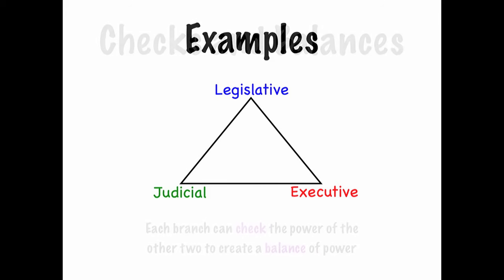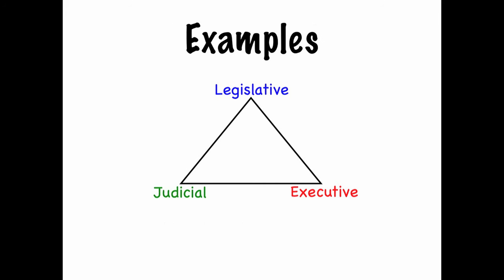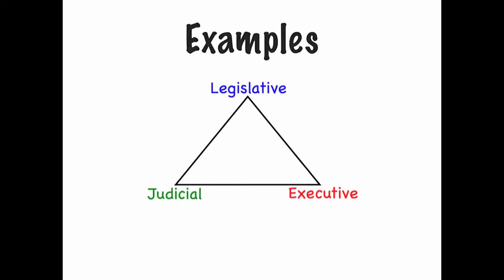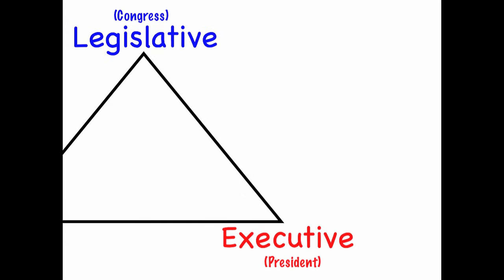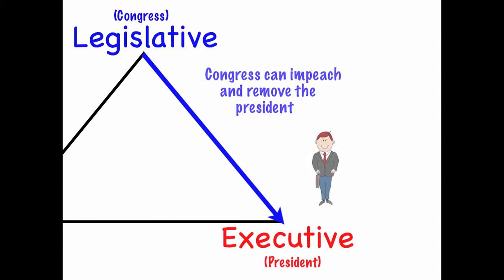Let's look at a few examples of how this works. Congress has power over the President because Congress can impeach and remove the President. When the President commits a crime, Congress can formally charge the President and remove him or her from office.